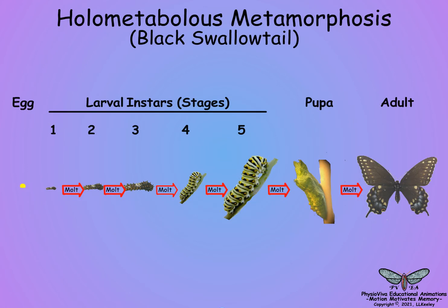Holometabolus larvae usually have soft bodies with no resemblance to their winged adults. At each larval-larval molt the larval instars enlarge. The fifth instar larva feeds voraciously, grows dramatically, and molts to a quiescent pupa.